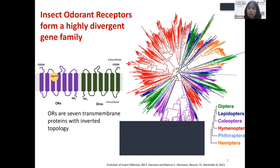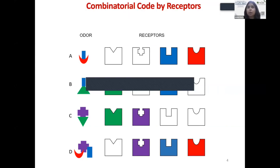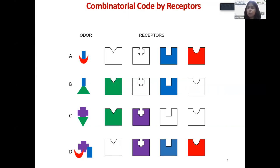These are seven transmembrane proteins but with an inverted topology, meaning the N-terminus is intracellular and the C-terminus is extracellular. The olfactory receptors work as a complex: there is one constant Orco (olfactory receptor co-receptor) and a variable unit OrX. The ligand actually interacts mostly with the variable units and leads to signaling. They encode signals through combinatorial coding, in which one odor can interact with multiple receptors to initiate both cellular and behavioral responses.